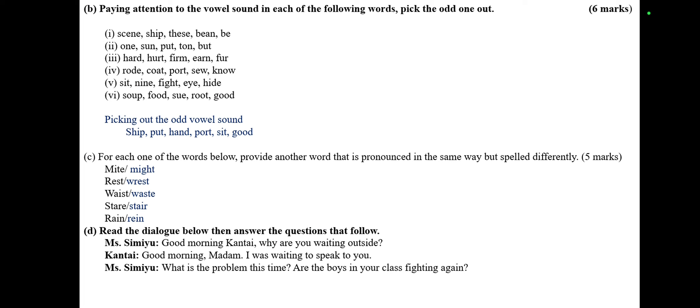Part C: for each one of the following words, provide another word that is pronounced in the same way but spelled differently. Five marks. The words are: might, rest, waste, stare, and rain.